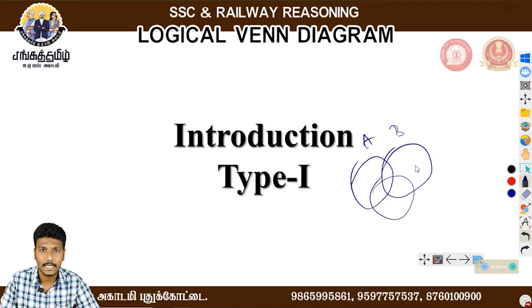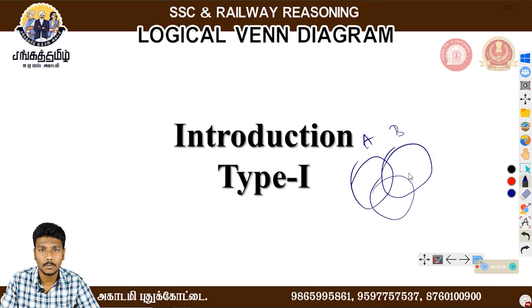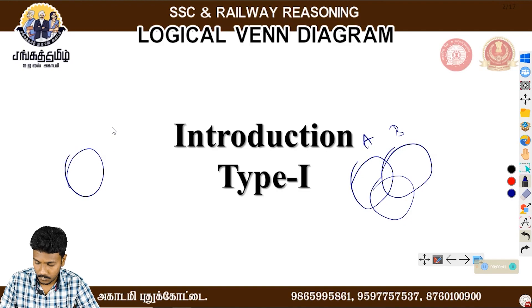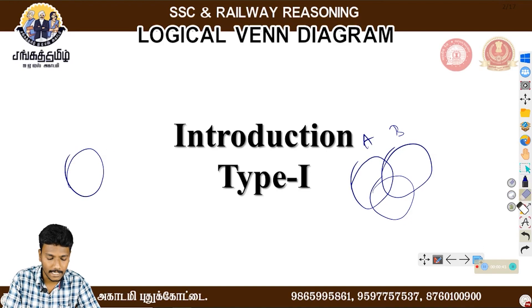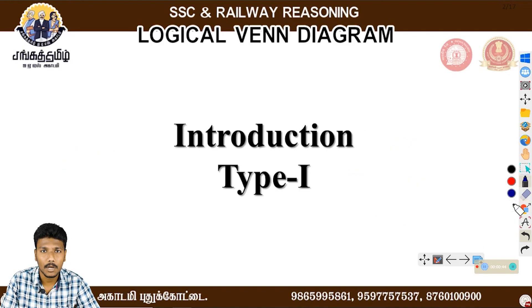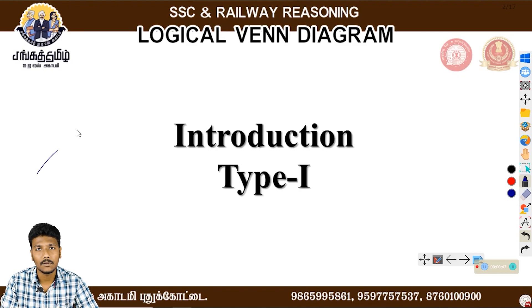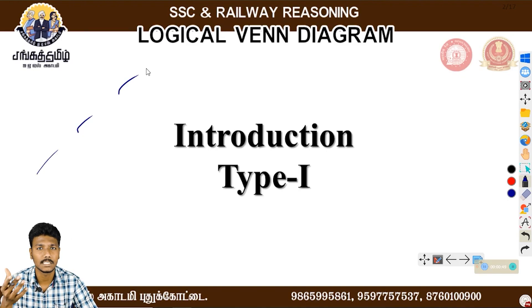We will talk about the second type and the first type. We will talk about the moon entities, then the table, chair, and furniture.